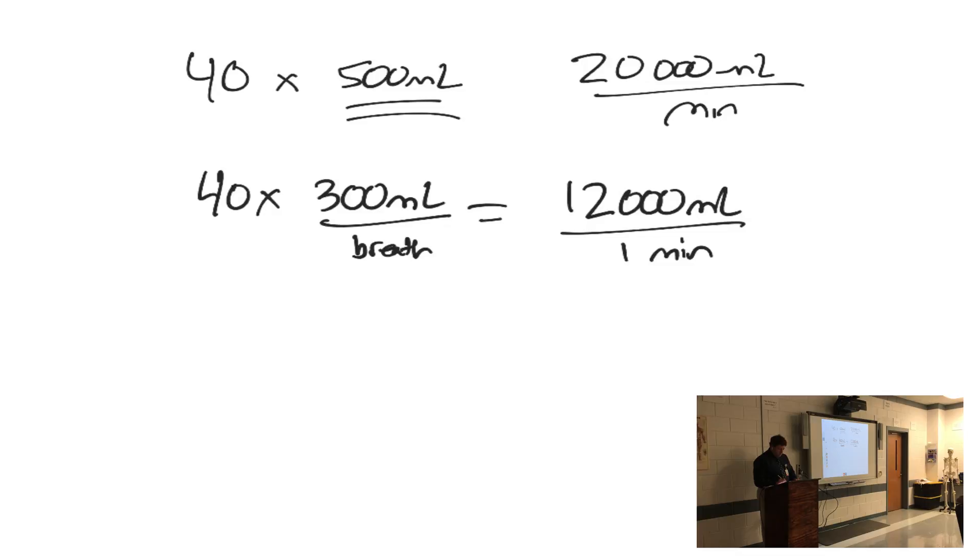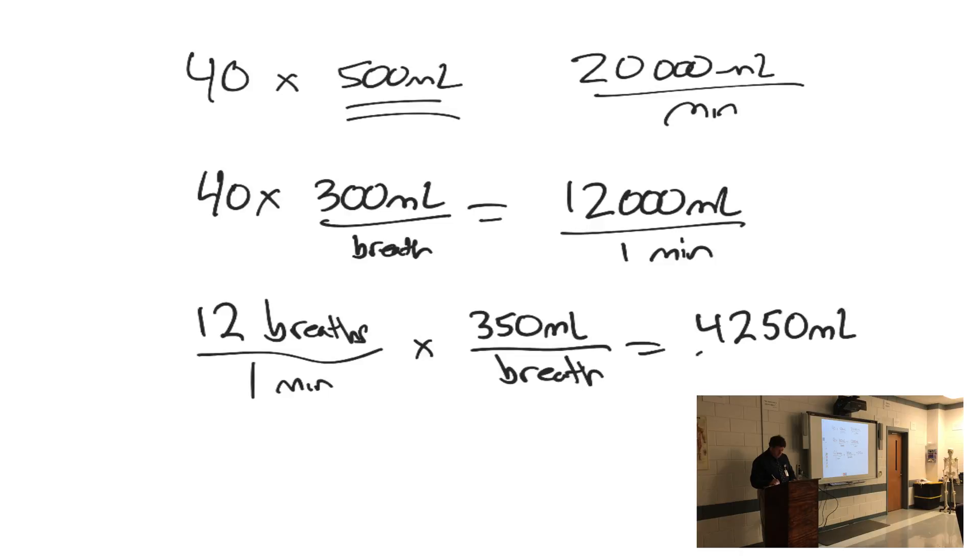But remember the dead space thing? So let's talk about alveolar ventilation. If somebody's breathing 12 times a minute, and remember how much alveolar ventilation was in a typical breath? A normal breath is 500 milliliters of air, 150 milliliters of dead space, so it's 350 milliliters. And that equals, my breaths cancel out, so I end up with what's going into my alveolar space is 4,250 milliliters in a minute. And that's enough for oxygen and carbon dioxide to go back and forth.